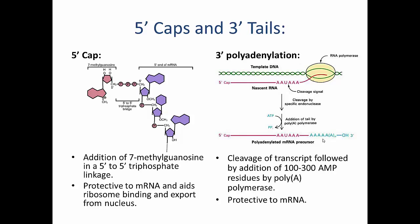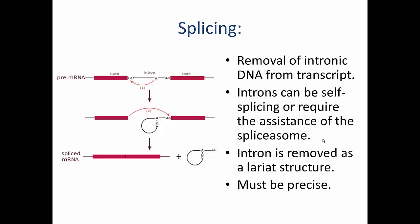Eukaryotic mRNAs are also subject to splicing. Nascent RNA molecules contain both introns, the non-coding regions, and exons, the coding regions. These introns must be removed before the mRNA can function as a template for protein production. Introns can be self-splicing or can require the spliceosome. A lariat structure forms within the intron, and the two ends of adjacent exons join to form a continuous coding region. This splicing must be very precise: if a single nucleotide is left behind or removed at the splice site, the entire coding sense of the subsequent exon is shifted and becomes nonsense.